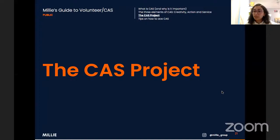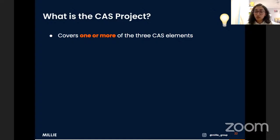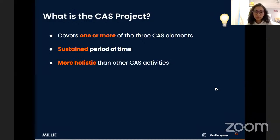Now let's talk about the CAS project. It is a project that covers one or more of the three CAS elements — it can focus solely on creativity, action, or service, or be a combination of two or all three. You usually do it for a sustained period of time, making it a much longer process than your other CAS activities. Because of this, it's a more holistic approach, with more planning, thought, and consideration involved.